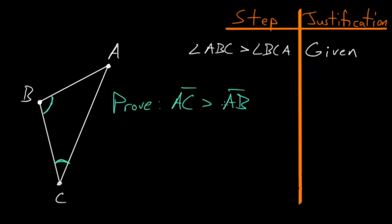And the way that Euclid approached this proof is by first assuming the opposite. Assume that AC must either be less than AB or equal to AB. So let's take each of these two cases individually.